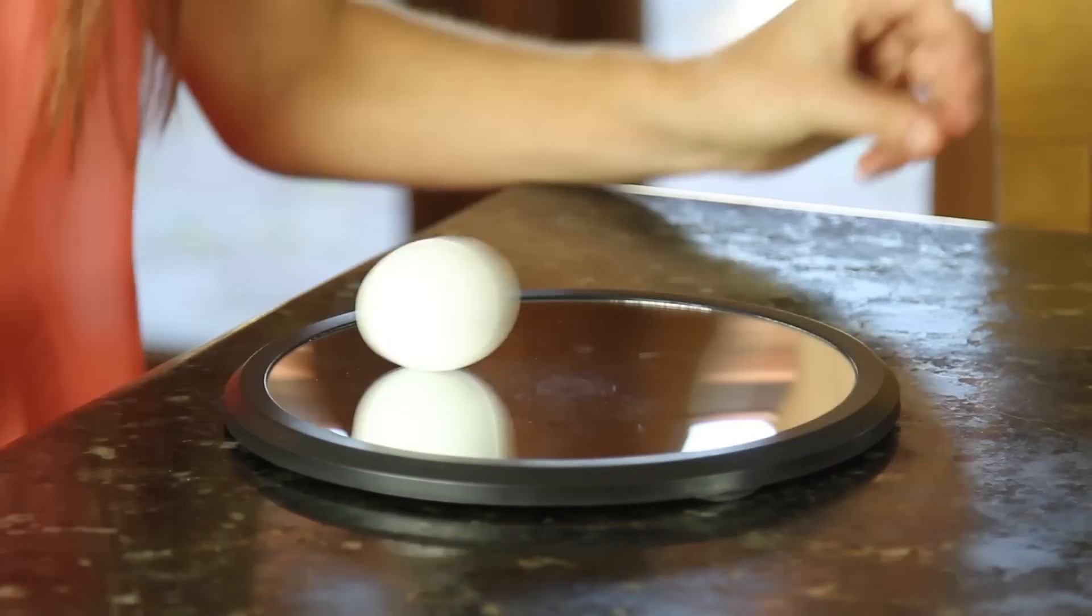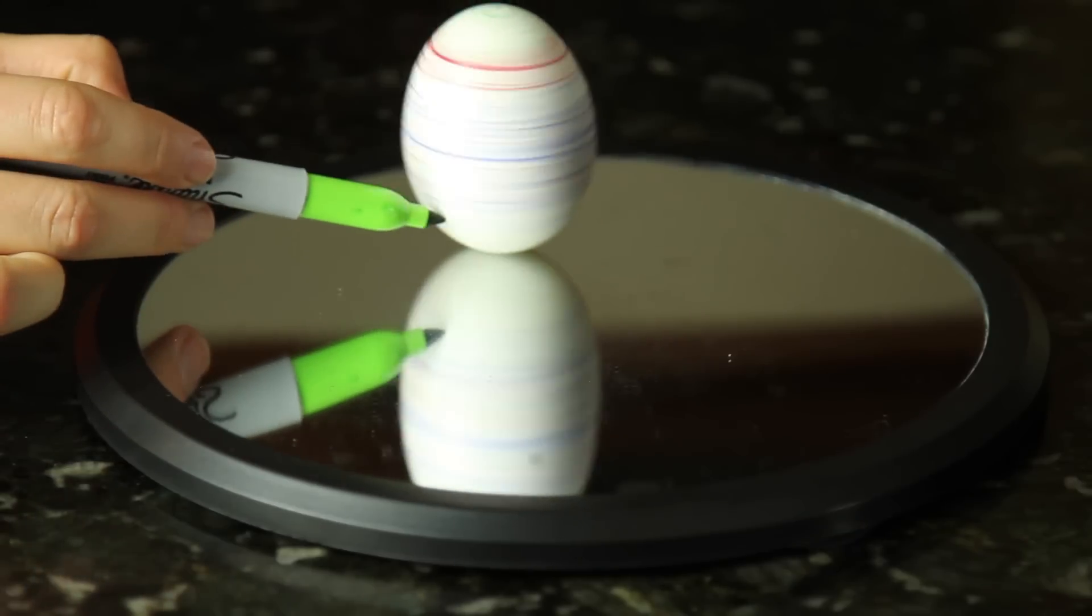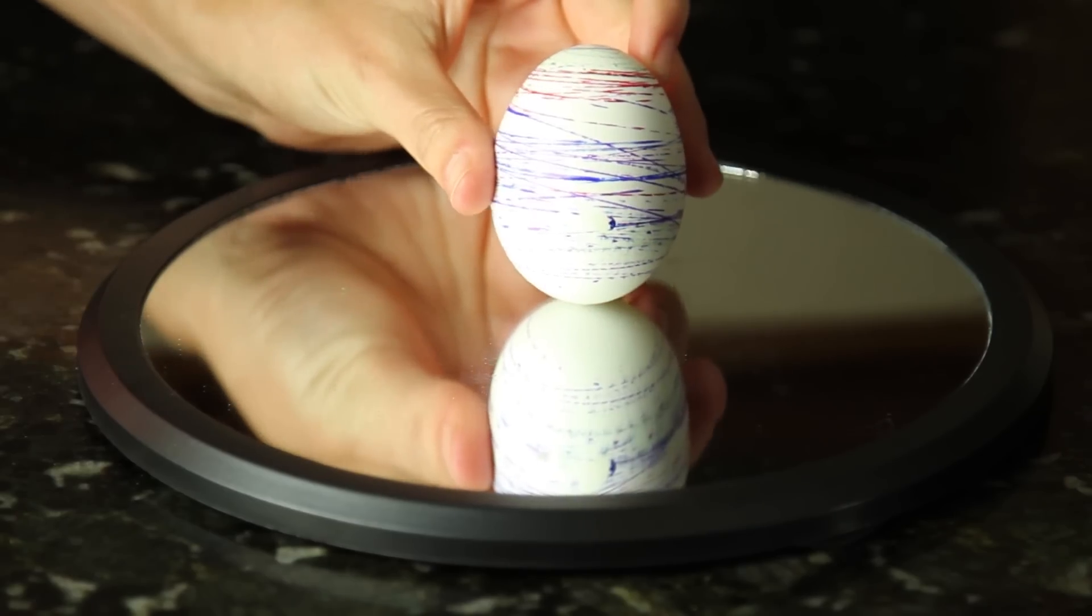It'll even stand up on its smaller end. And the best part? You can spin it and color it with markers. Perfect way to decorate your Easter eggs.